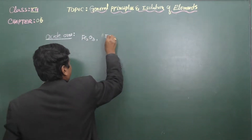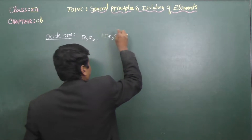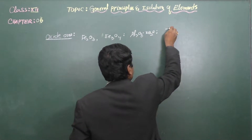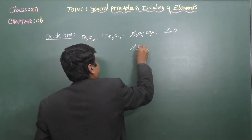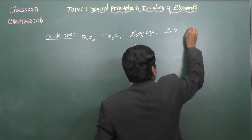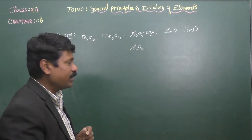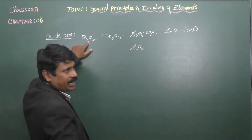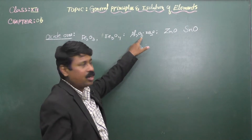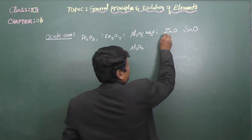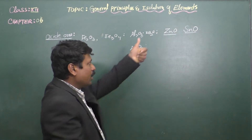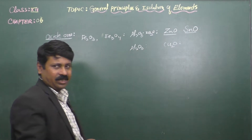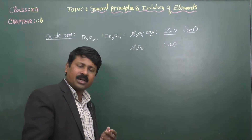Examples of oxide ores: iron occurs as Fe₂O₃ (hematite) and Fe₃O₄ (magnetite); Al₂O₃·xH₂O is bauxite; Al₂O₃ alone is alumina; ZnO is zincite; SnO is the ore of tin. Copper also occurs as cuprite, though it is not the chief ore of copper.